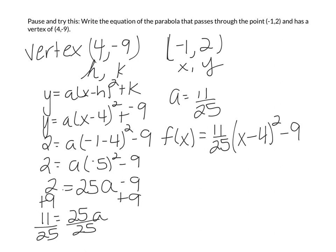As a side note, how would you describe that transformation from the parent graph? This is a shift right 4, with a vertical shrink factor of 11/25 (because it's less than 1), and a vertical translation down 9.